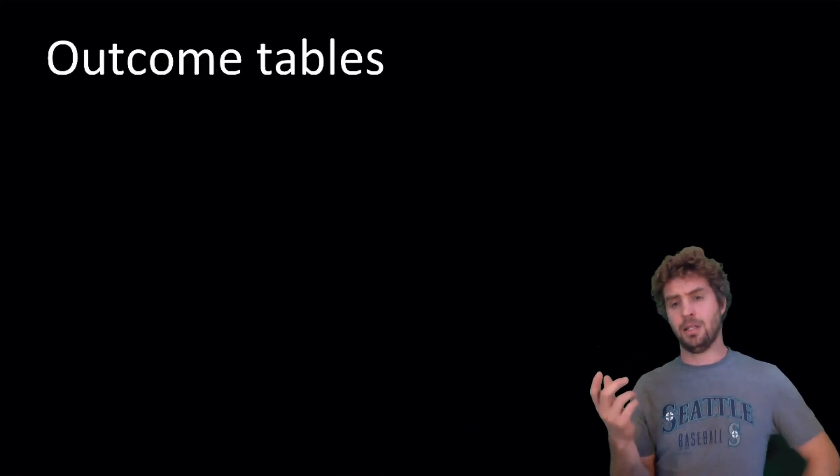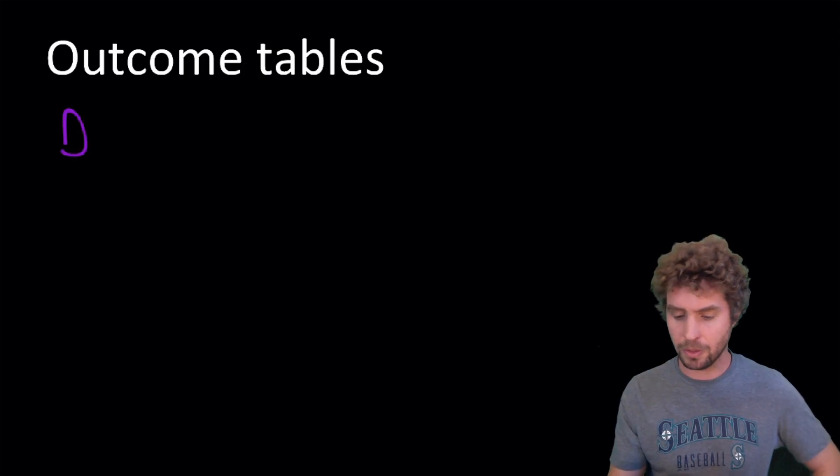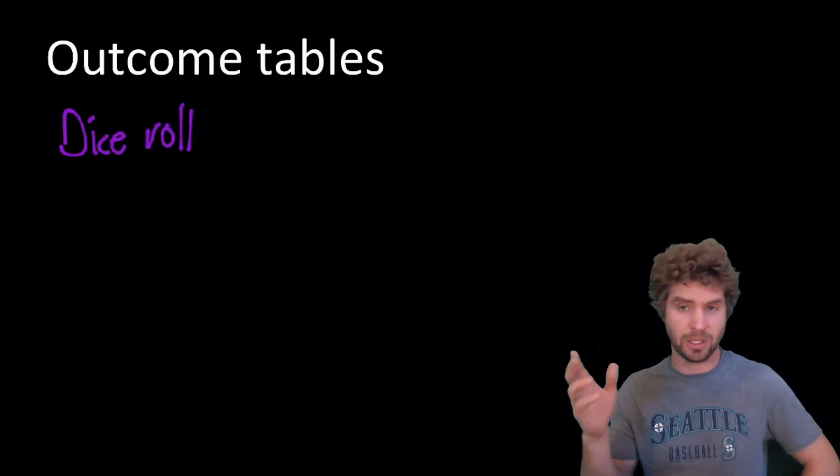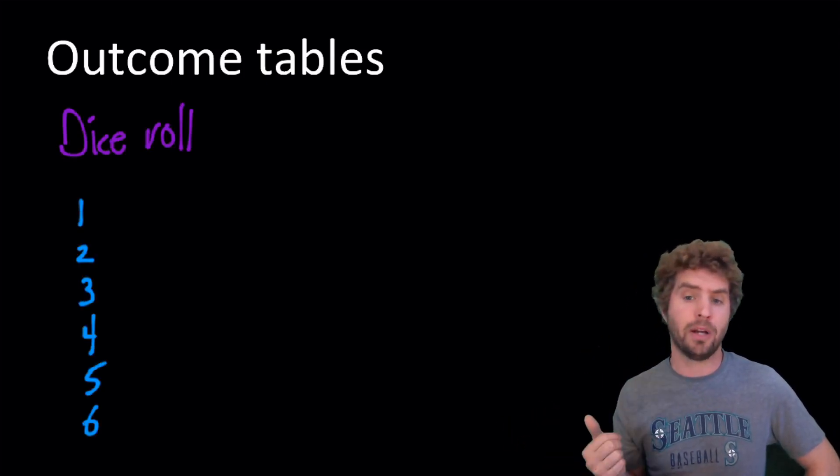And, for the next scenario, we're going to look at outcome tables and why we might want to use outcome tables. For example, if we're rolling a dice. Or a die or whatever, however we say that, the different outcomes in one roll are one, two, three, four, five, and six.